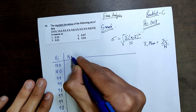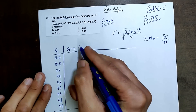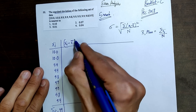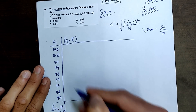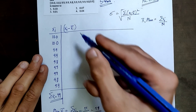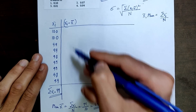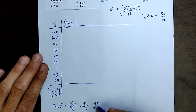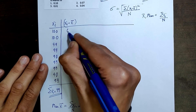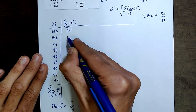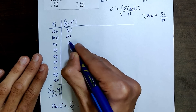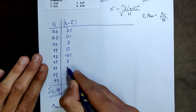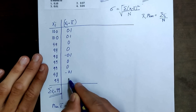Now we will write XI minus X-bar and subtract each term from the mean. Subtracting, we get: 0.1, 0.1, 0, 0, -0.1, 0, 0, -0.1, 0.